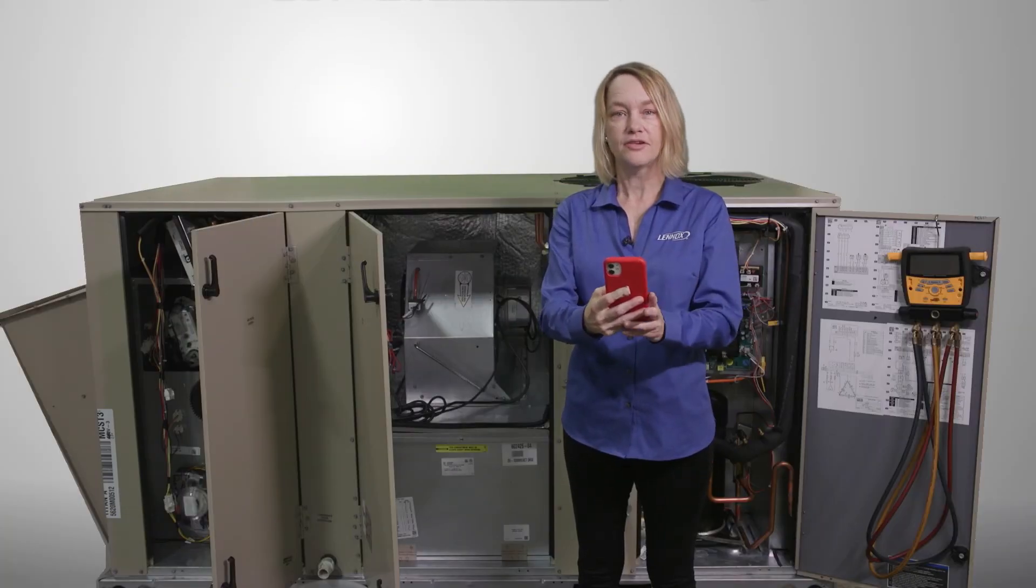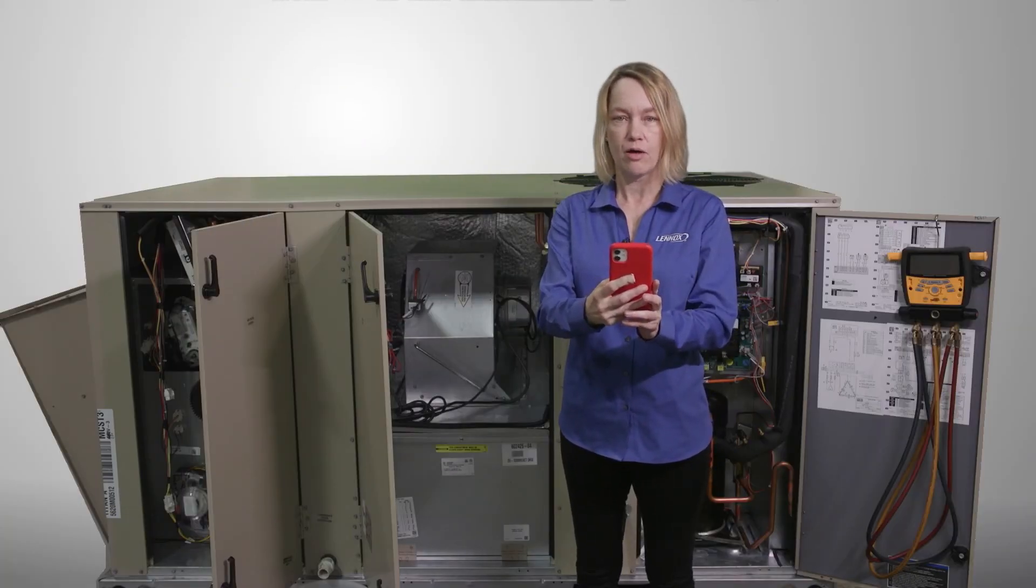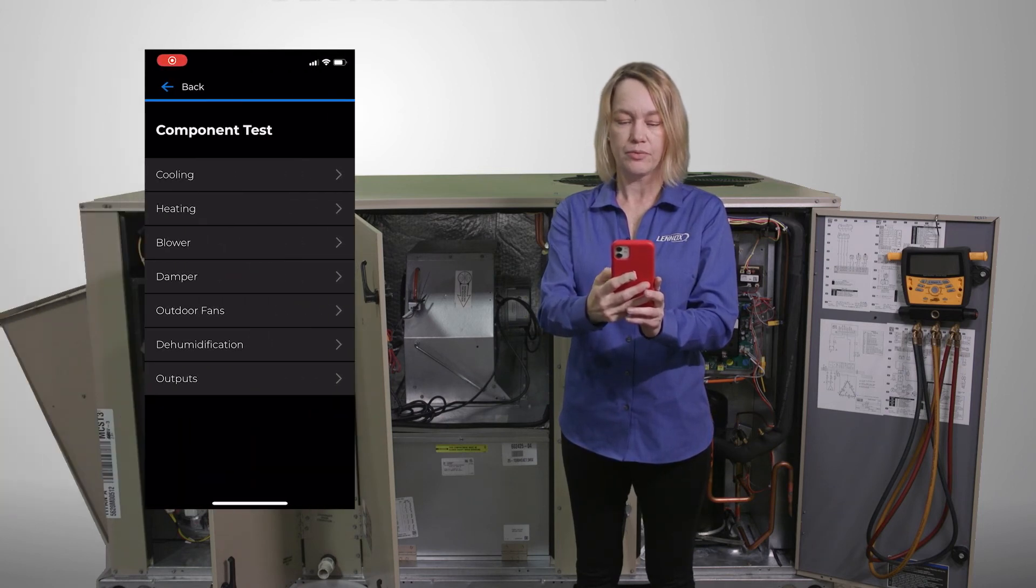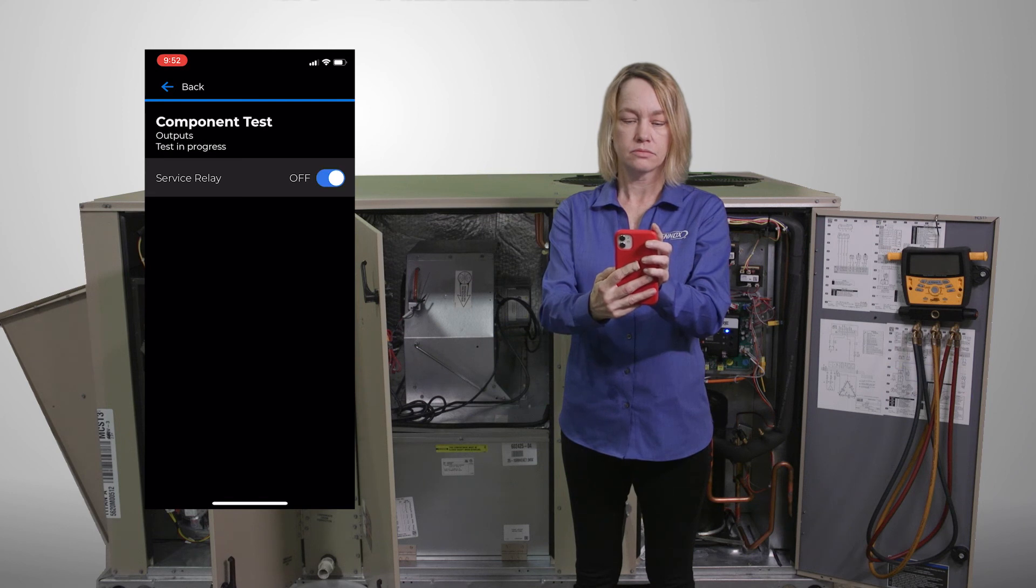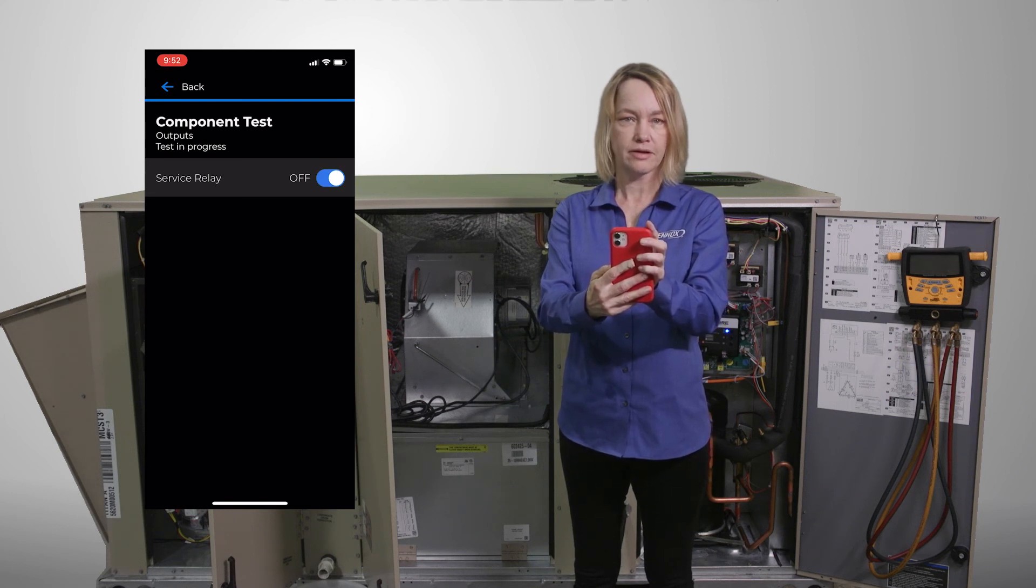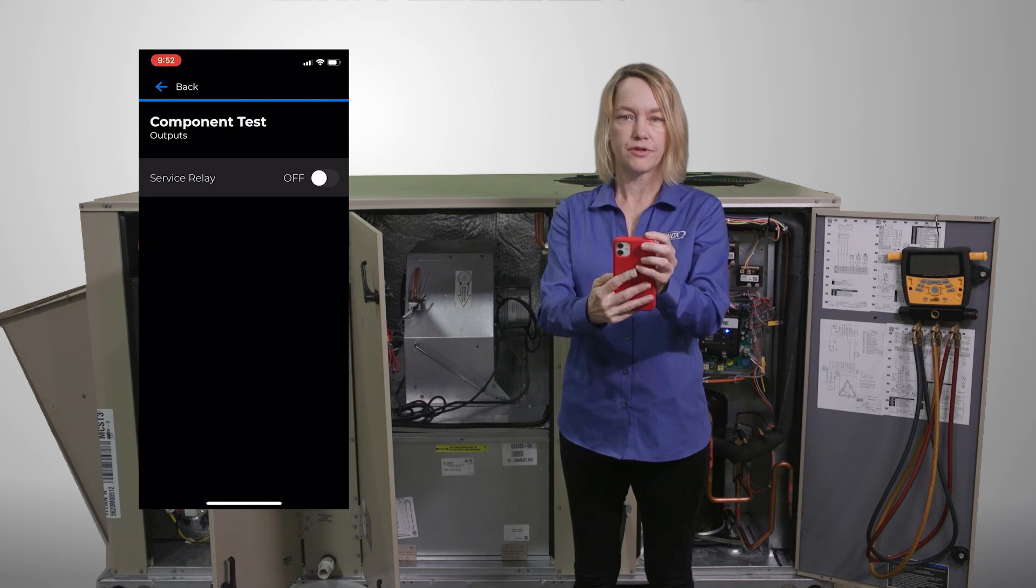The last test that we can perform is component outputs. Press outputs. Turn the service relay on. Hear the click. Press the back button when you've done with the test.